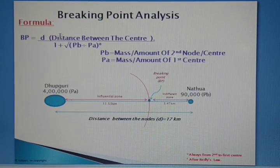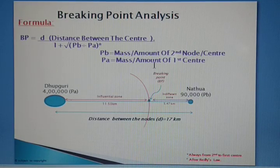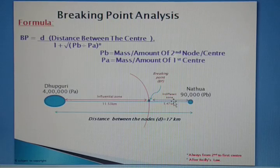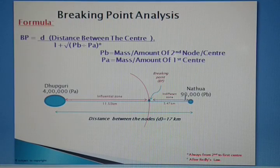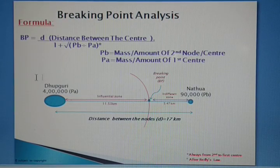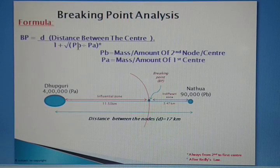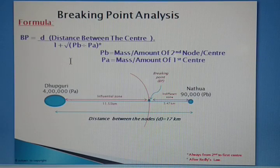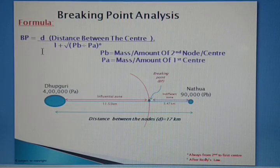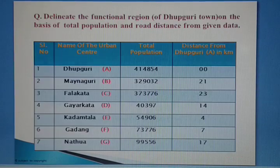PV represents the mass or population of the second node — here Natua with a total population of 90,000. PA represents the first center, Dhubguri, having four lakh population. If you put the total population values into PV and PA in the formula, you will get the BP value.